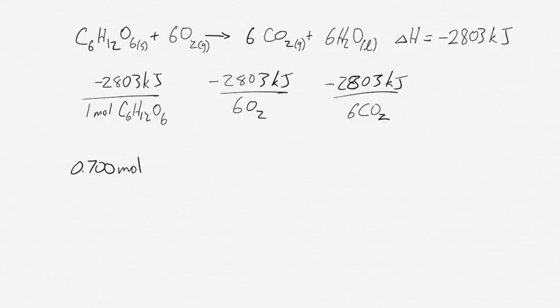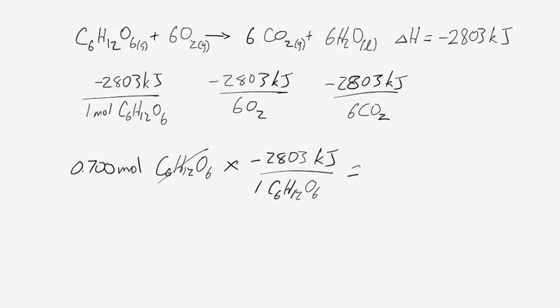You take your data, 0.7 moles of glucose (C6H12O6), and you multiply it by 2803 kilojoules for every one mole of glucose, and your glucose is cancelled and you're left with the amount of heat that's released for 0.7 moles. That turns out to be negative 1.96 times 10 to the 3 kilojoules when you take into account the significant figures.